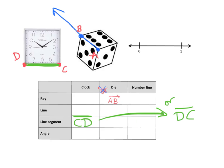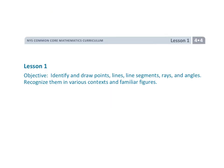Let's do one last one — an angle on the clock. I'll call this E, this F, and that G. The name of our angle: F has to be in the middle because it's the corner, the vertex. So we're going to say angle GFE is an appropriate name for that angle. And that wraps up Grade 4 Module 4 Lesson 1.